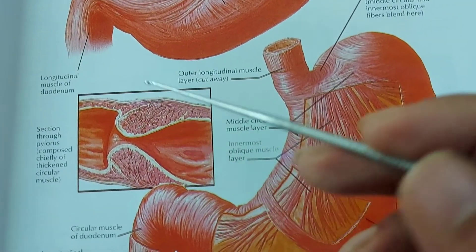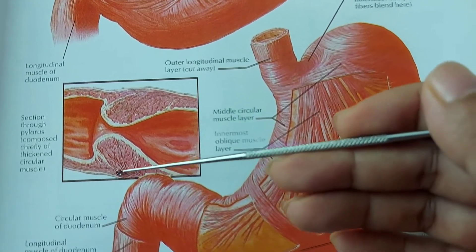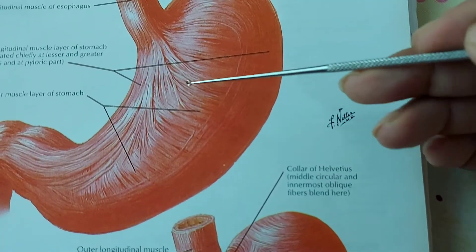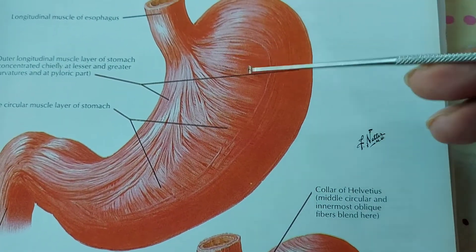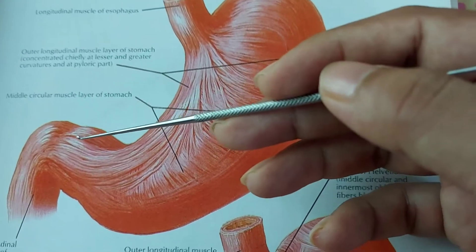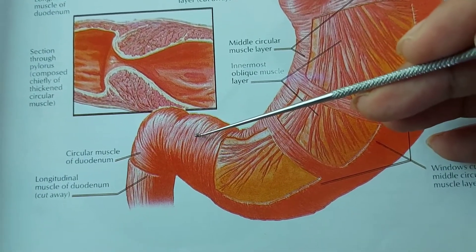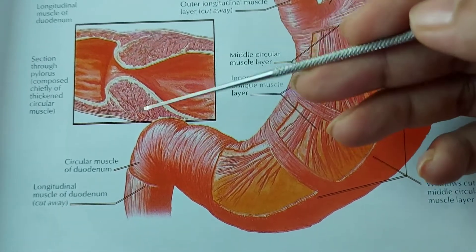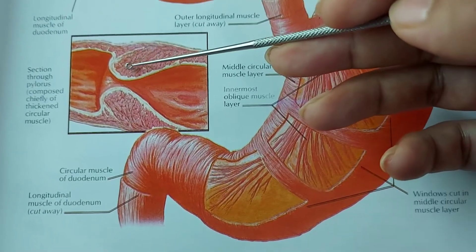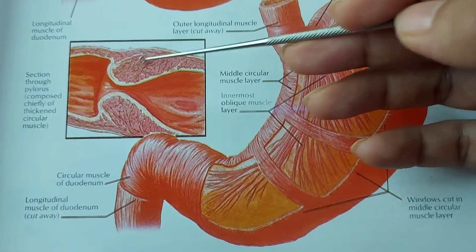Here is a section through the pylorus. On the outside there is the longitudinal muscle, and some fibers of this longitudinal muscle enter into the deeper fibers. Here is the circular muscle of the stomach. All over the stomach there is circular muscle, but at the pyloric end the circular muscle is thickened. This thickened circular muscle forms the sphincter at the pylorus. Contraction of this circular muscle causes closure of the sphincter, and contraction of the longitudinal muscle causes opening of the sphincter.